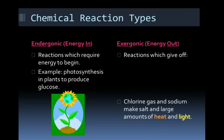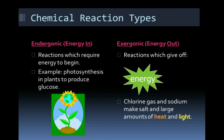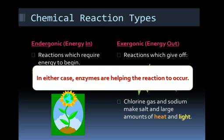Let's talk a moment about chemical reactions. There's two kinds of chemical reactions in chemistry. One, which requires energy to be input. These are called endergonic reactions. And then there are exergonic reactions, which have an output of energy. So photosynthesis is an example where the sunlight is absorbed by chloroplast, and then that sun energy is turned into glucose energy, which then can be eaten and consumed for energy. Exergonic reactions would be the opposite. So energy is the byproduct. If you mix chlorine gas and sodium, it makes salt, but there's also a lot of heat and light being produced. In either case, enzymes are helping the reaction to occur.